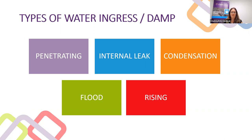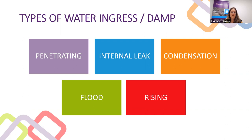Then of course there is flood — quite self-explanatory — but it can be from weather events as we've seen in New Zealand with global warming, or it can be from an internal leak like the pictures I showed you earlier where the sprinklers went off, or from a hot water cylinder failure or a burst water tap inside the property.